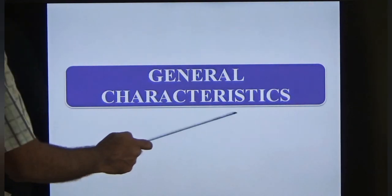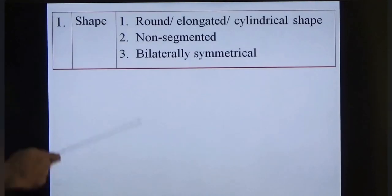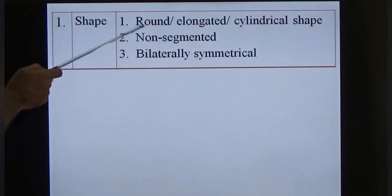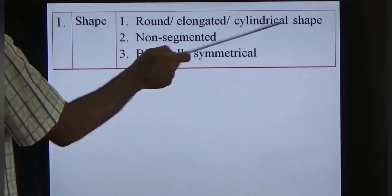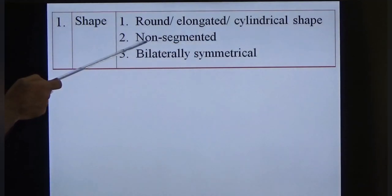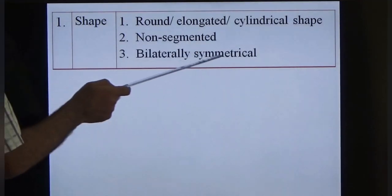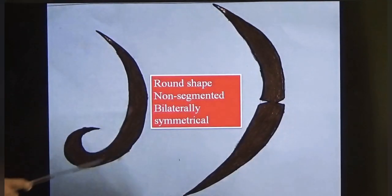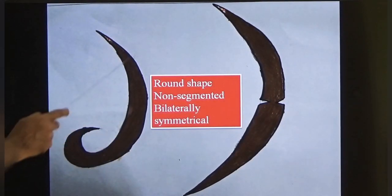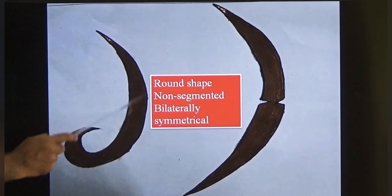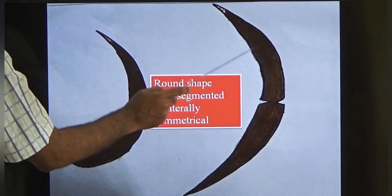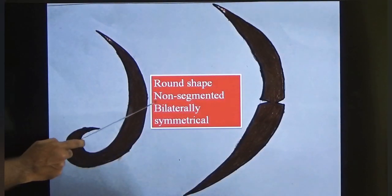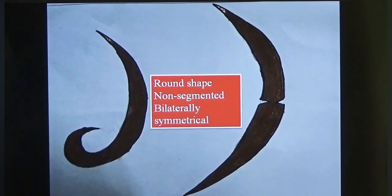Characteristic number one is shape. The shape of all nematodes is round, elongated, or cylindrical — non-segmented and bilaterally symmetrical. As you can see in the pictures, all nematodes have a rounded shape. They are non-segmented, unlike cestodes which are segmented, and bilaterally symmetrical, meaning both sides are equal.